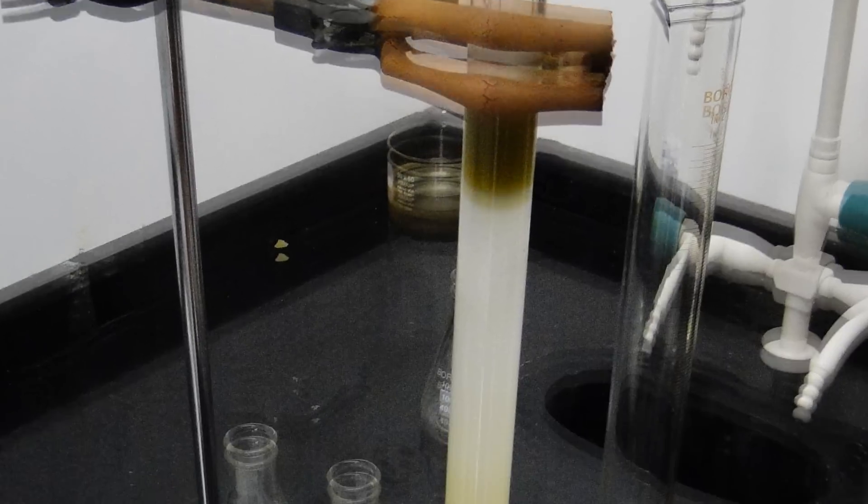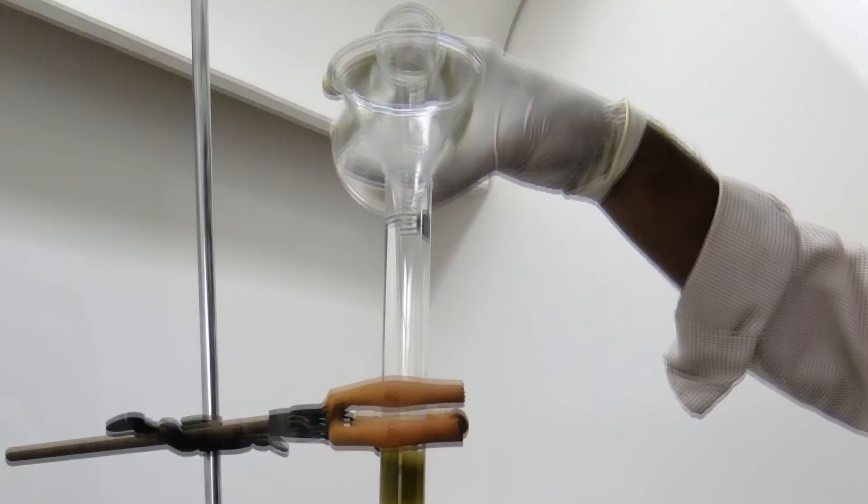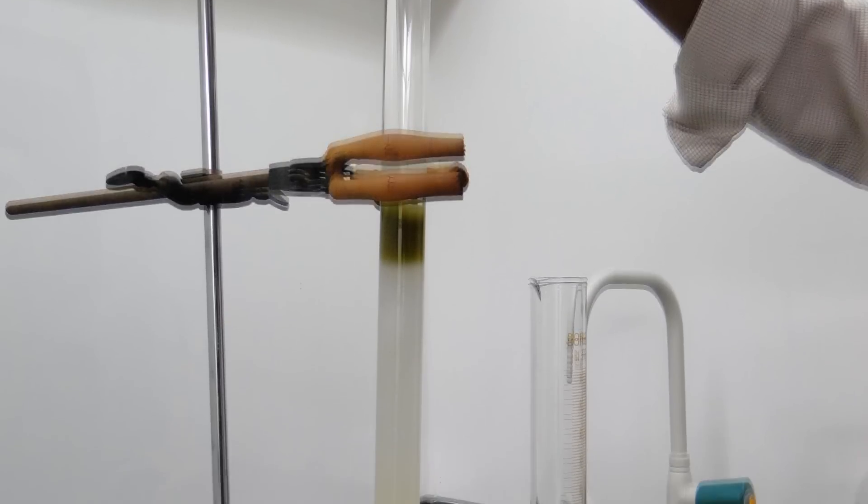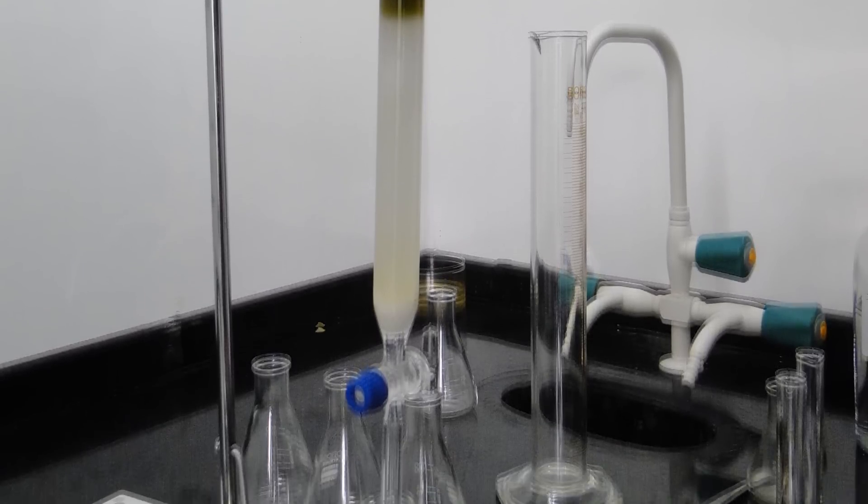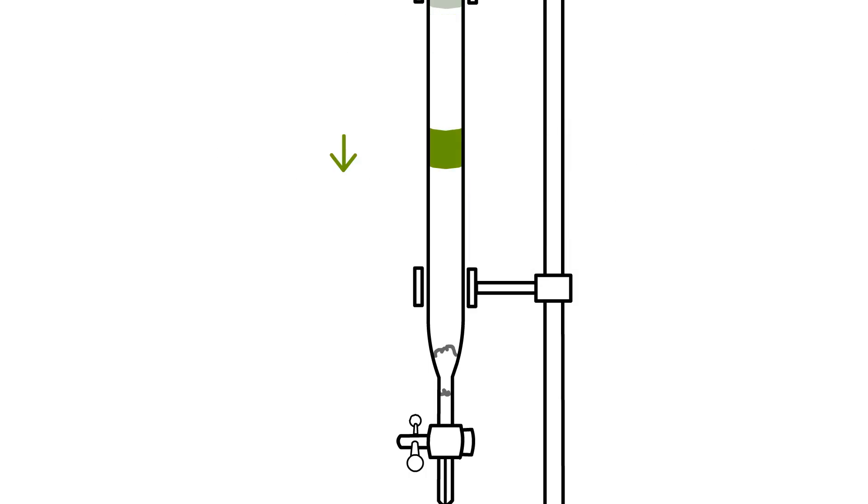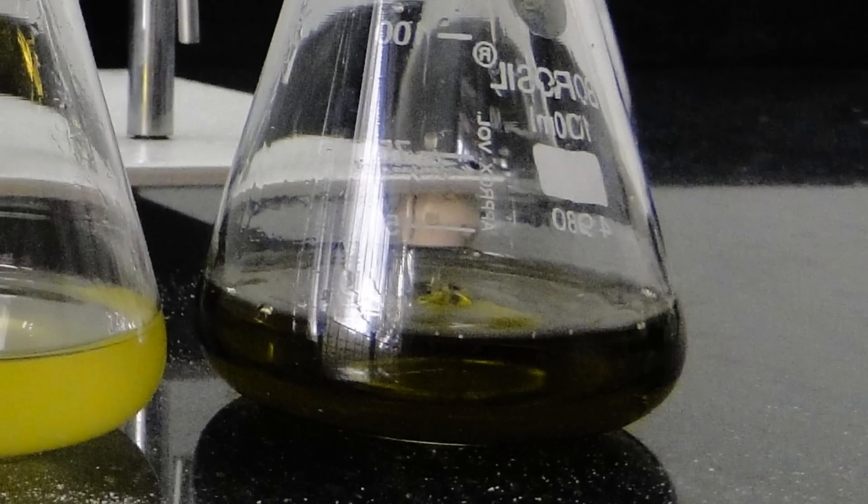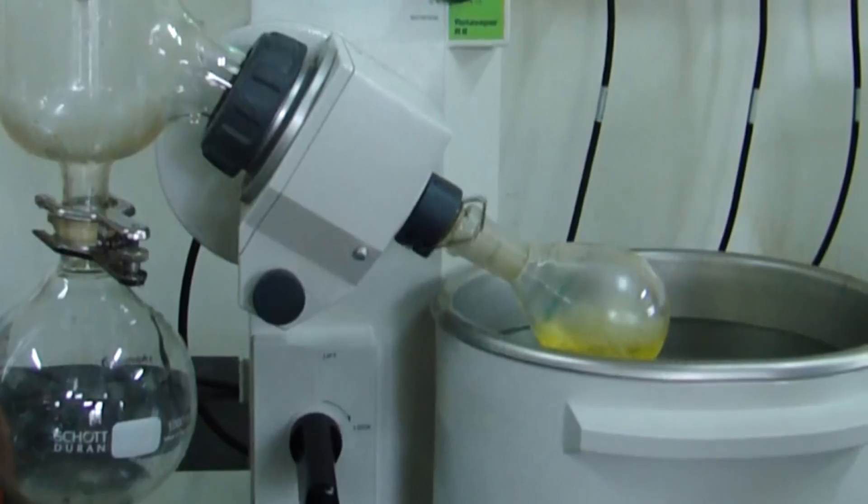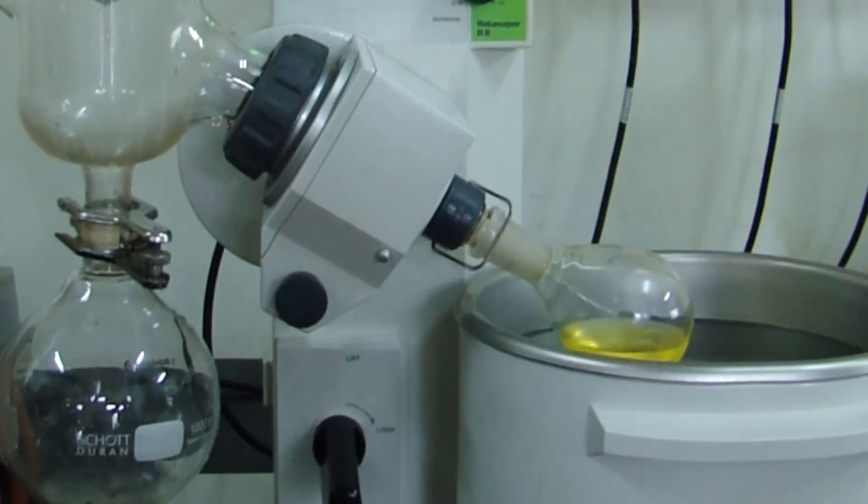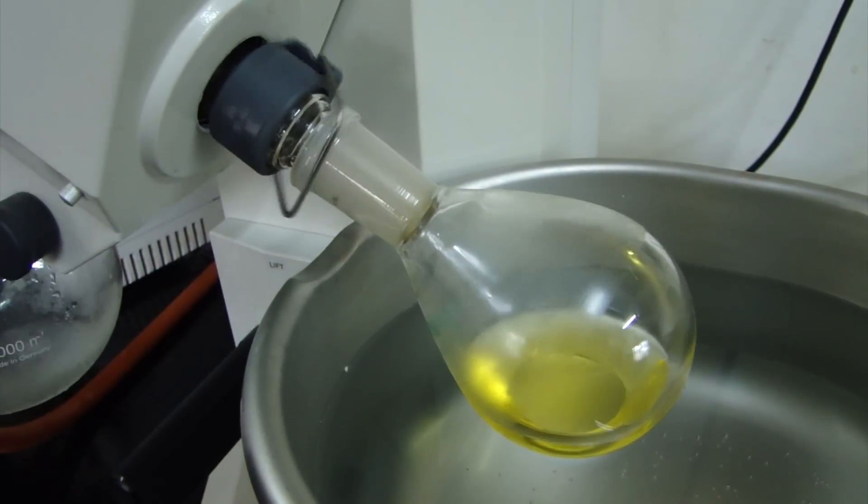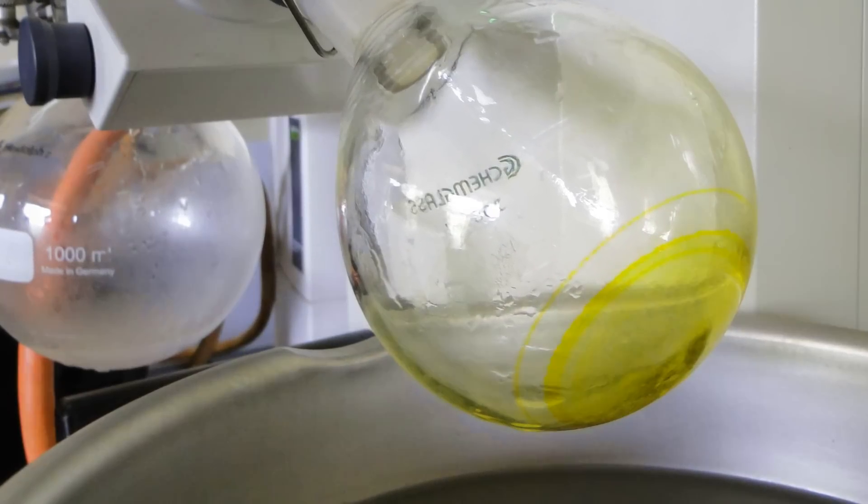When the beta-carotene band is completely eluted out, acetone is added to the column so that the polar components chlorophylls A and B will elute out as a single band. This is also collected and the fractions are later rotary evaporated to obtain pure beta-carotene and chlorophylls as yellowish-orange and green colored solids respectively.